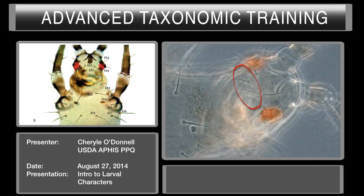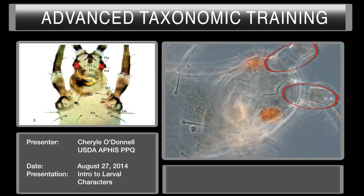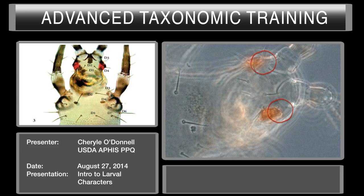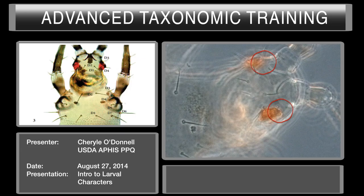D1 is shown right here — this is a pair of setae at the posterior edge of the head. We have D2 setae, which are shown here laterally. The antennae are here, and the eyes. So we are looking at a lateral view. D1, D2. And then we have D3, which is shown right here — just on the anterior edge of the eye. And D4 is back here. D3 is on both sides of the head, and D4 is on both sides of the head.